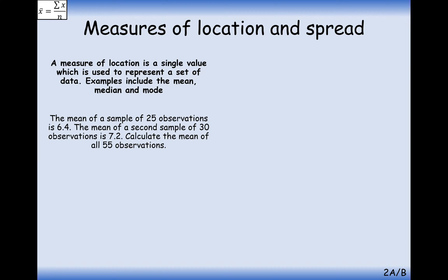What we're going to look at first, however, is a little question that combines two means together. So we've got two separate means here. 6.4 from an observation of 25 pieces of data. And a second observation of a sample of 30 observations is 7.2. To calculate the mean of all 55 values.